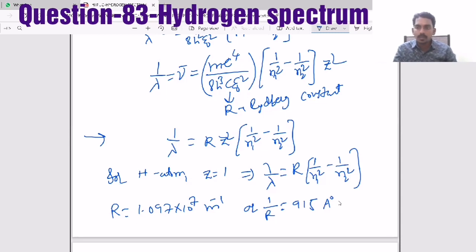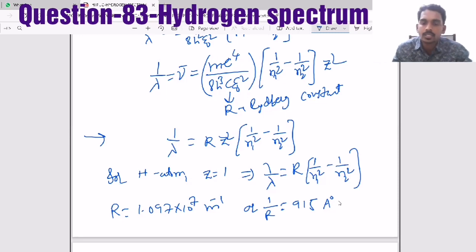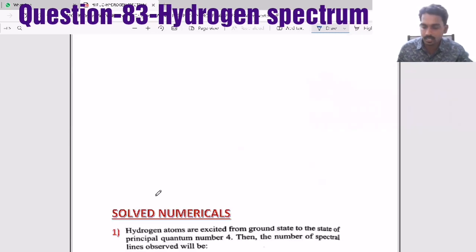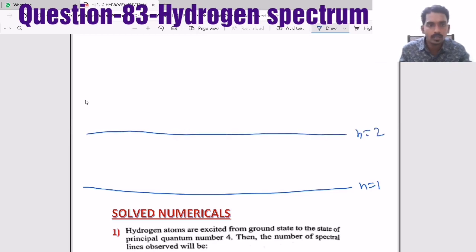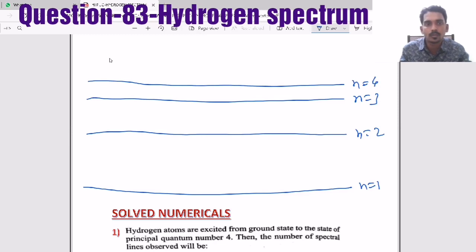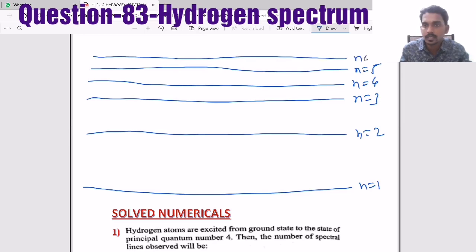So this is what happens when an electron jumps from a higher energy level to a lower energy level — electromagnetic radiation is emitted as a photon whose wavelength or wave number is given by that equation. Now consider the different energy levels of hydrogen: ground state n=1, then n=2, n=3, n=4, n=5, n=6, and so on.